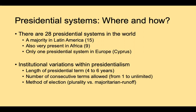There are a lot of variations even within presidential systems. The length of the presidential term can vary, often from four to six years. The number of consecutive terms allowed — from one to unlimited — can also vary. In Chile, no consecutive terms are allowed. In the United States, consecutive terms are allowed. In Mexico, no re-election is possible whatsoever — not only is there no consecutive term, but the president can't be re-elected.